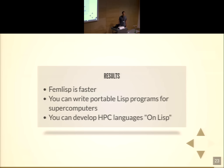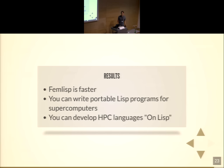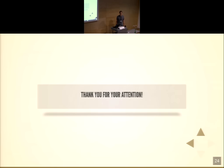Final results: FEMLISP is significantly faster, and everyone in the community who is interested can now write portable Lisp programs for supercomputers, build a static image, and launch it. Most importantly, you can now try to develop HPC languages on top of Lisp — doing macro expansion on abstract notation to generate good code — which I think is a very interesting research topic, because currently we don't know how to write code for a computer with 200,000 cores. Thank you for your attention.